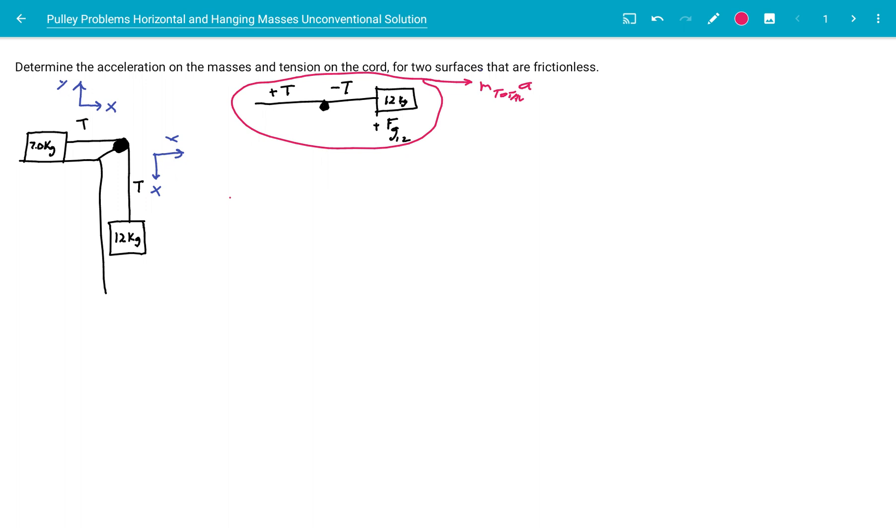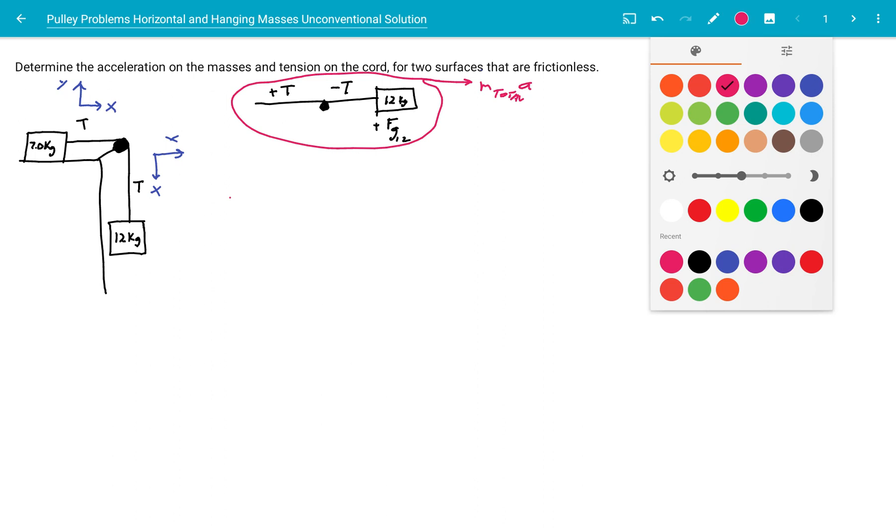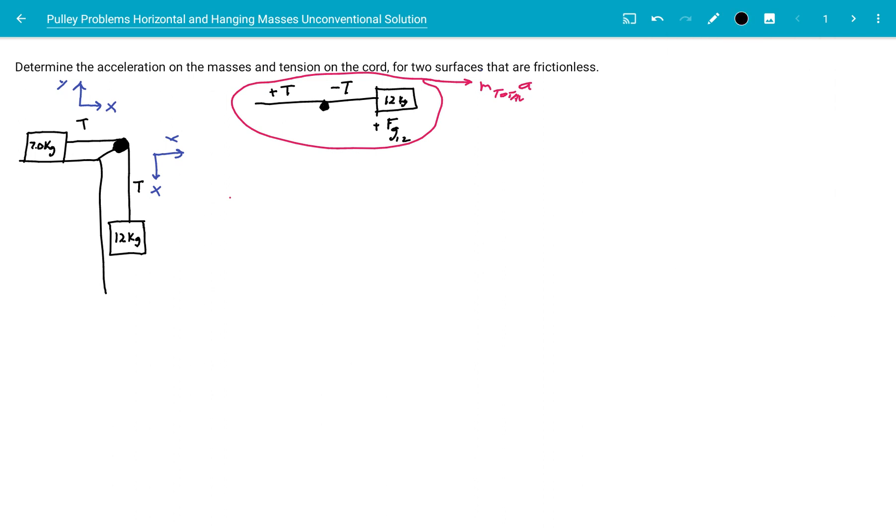Let's set up the net force in the x direction, meaning we're using the chord as our x-axis. So the net force in the x direction is going to be a positive T minus a negative T, that's the tension, so those cancel out. We have a positive Fg12 from the hanging mass. It's going to be equal to the total mass times the acceleration.